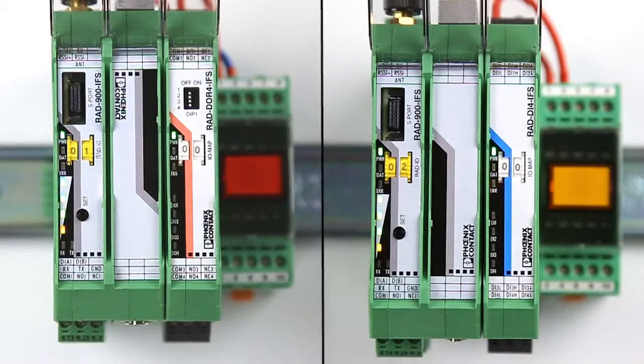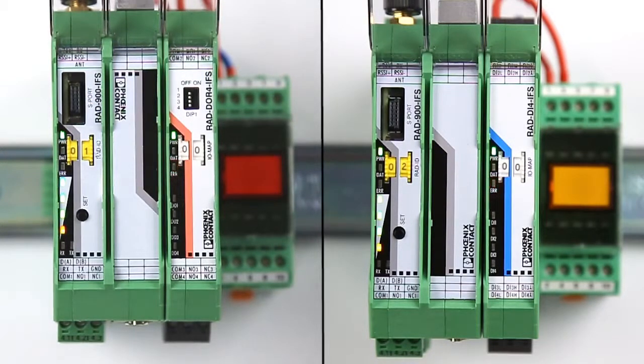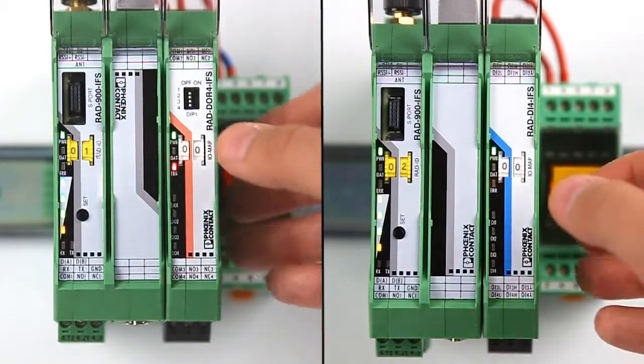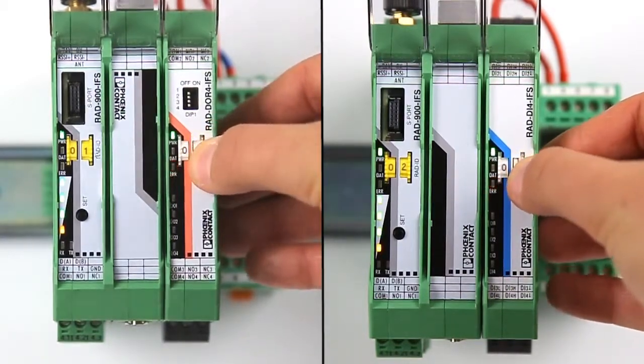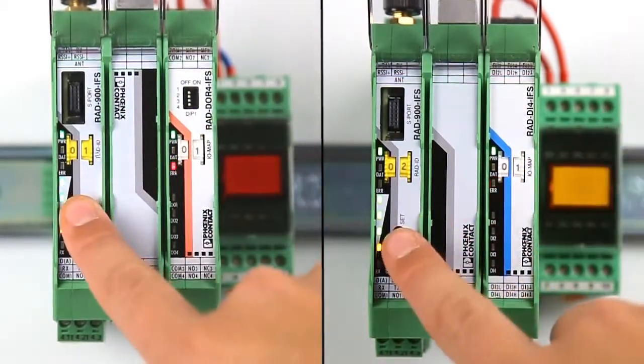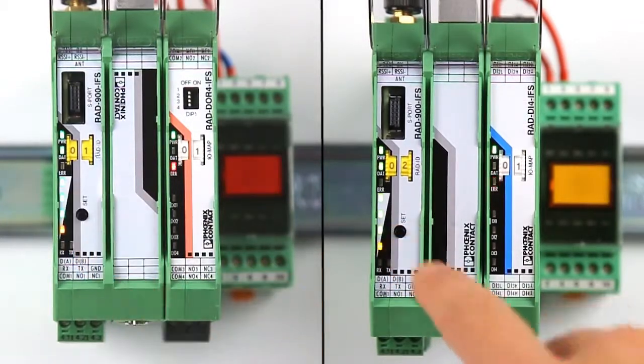To add these to the wireless network and map the I.O. modules, simply set an I.O. map address using the white thumb wheels on each I.O. module. Set them both to the same number and press the set button on each wireless module, enabling the detection of the I.O. modules.